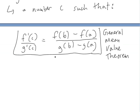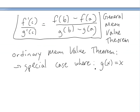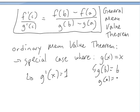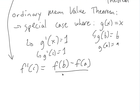The ordinary mean value theorem is just a special case of this, where g(x) equals x. In that case, g'(x) equals one for all values, and g(b) equals b, g(a) equals a. So g'(c) equals one, and Cauchy's formula reduces to the ordinary result: f'(c) equals f(b) minus f(a) over b minus a.